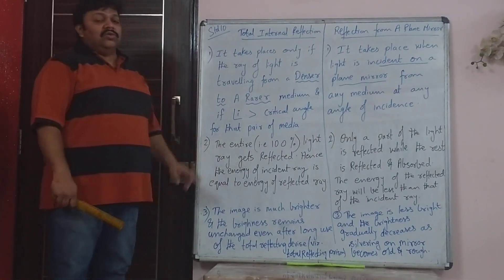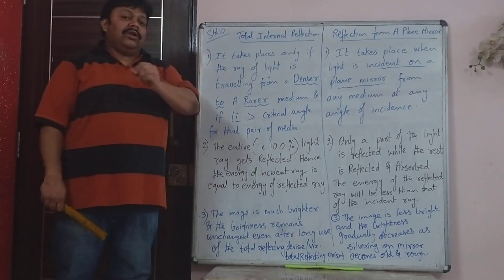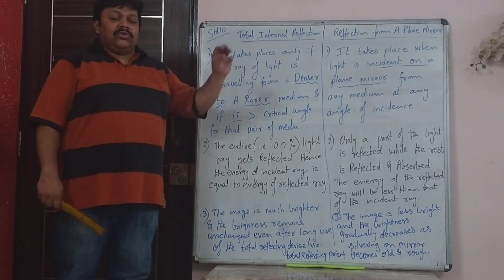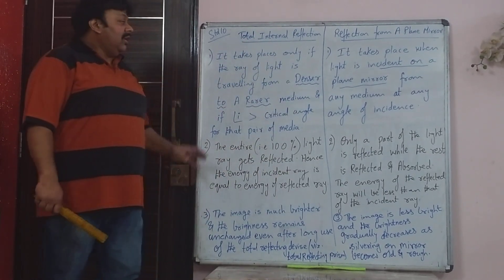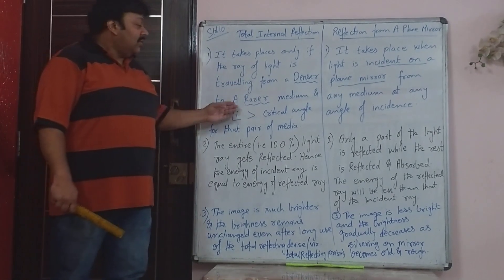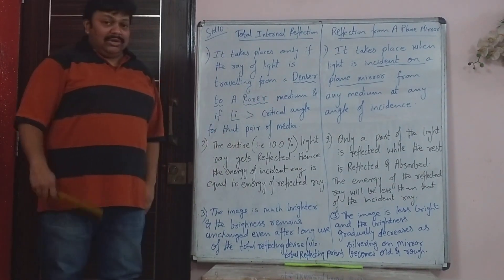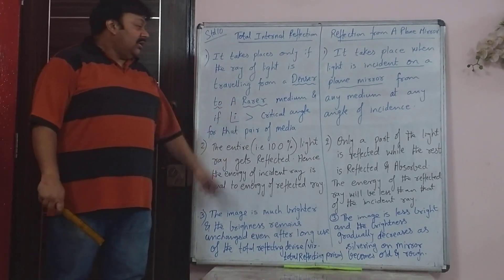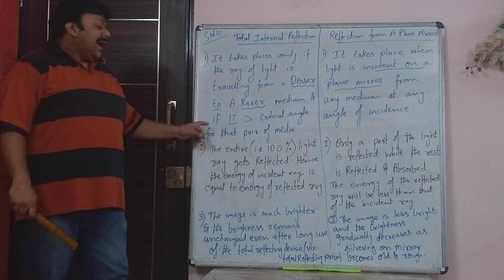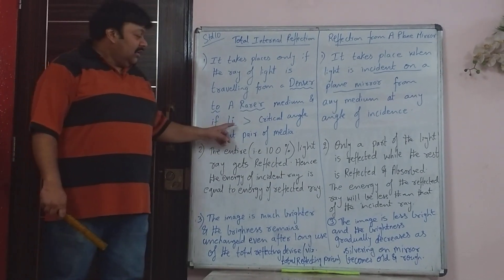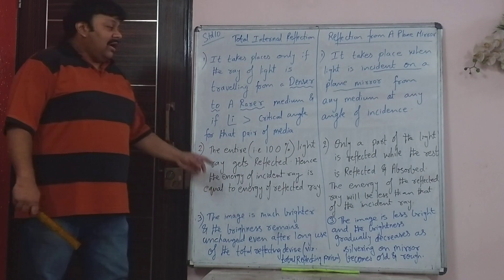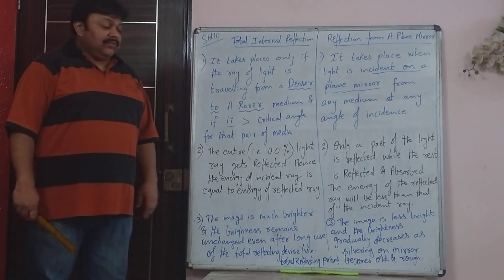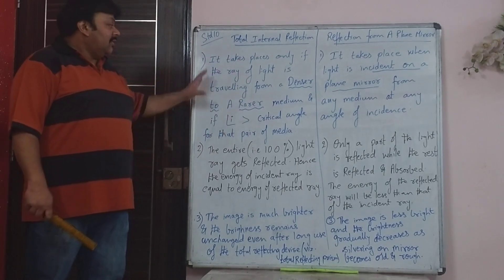First of all, last time you saw what are the two conditions when total internal reflection happens. Total internal reflection will happen only if the ray of light is travelling from a denser to a rarer medium — like we saw, it was travelling from water to air. And the second condition is that the angle of incidence has to be greater than the critical angle for that pair of media.